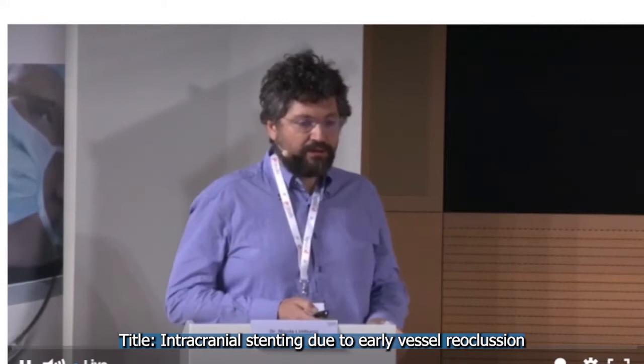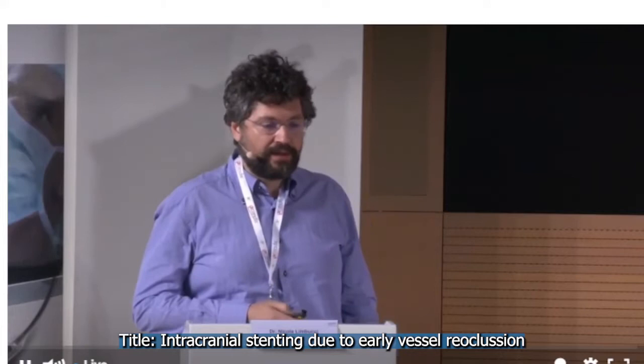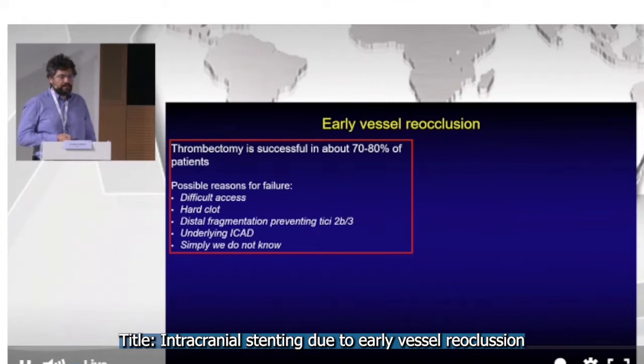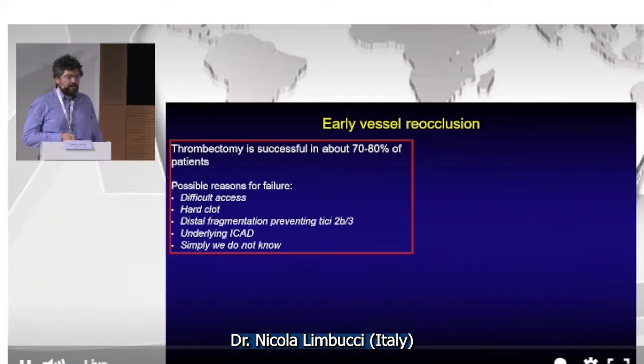Thank you for the invitation. I will focus on the topic of early reocclusion after endovascular thrombectomy. Thrombectomy is successful in most cases — about 70-80% — but not in every case. When thrombectomy fails, there are many reasons: difficult vascular access, hard clot, thrombus fragmentation preventing TICI 2b/3, underlying intracranial atherosclerotic disease (ICAD), or sometimes we simply don't know why.